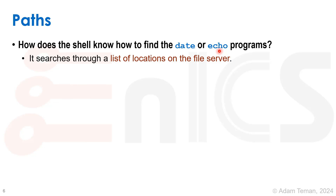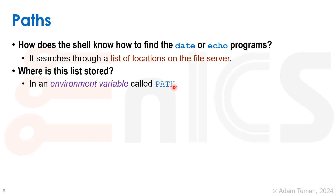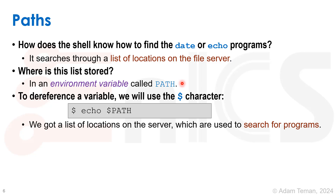So how does the shell know how to find the programs called date or echo? It's going to search through a list of locations on the file system. Where is this list stored? There is an environment variable called PATH, with capital letters. PATH has a list of locations to search for whatever program we just wrote in the command prompt. To see those locations, we de-reference the variable using echo with a dollar sign: echo $PATH gives us what the variable PATH equals — a list of locations used to search for programs.